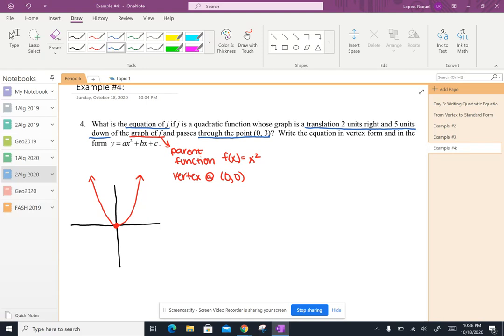Now the graph of j is translated two units to the right and five units down from that red one. So that would put that vertex down here at two comma negative five. So two to the right and down five. And we also know that it goes through the point zero comma three.